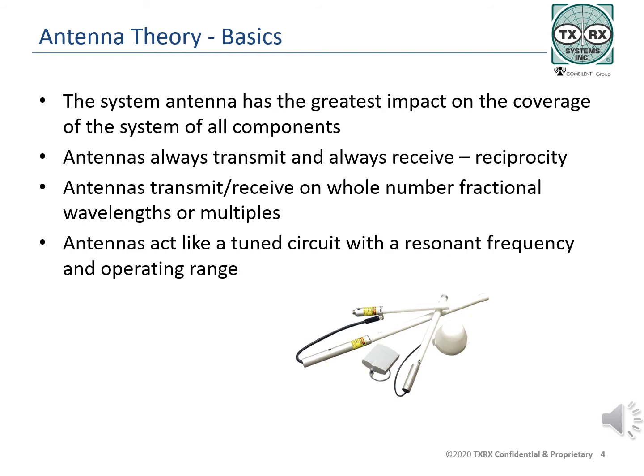Antennas are constructed of many different materials. A simple antenna can be made of a single length of wire suspended between two trees. If an antenna is made of a single rod mounted vertically, it will have a pattern that radiates out from it in all directions equally. In electrical terms, an antenna is a tuned circuit operating best at a single frequency and having an operational range.